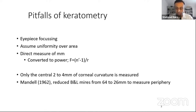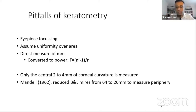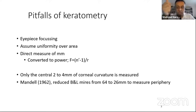There was an attempt in the 1960s: Robert Mandell took the Bausch & Lomb keratometer, reduced the separation of the mires, and was able to get peripheral curvature measurements too. However, this wasn't done routinely — it was mainly used in research.